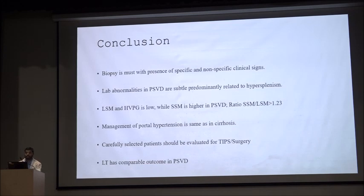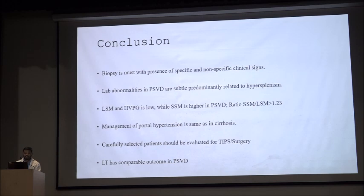In conclusion, biopsy is essential with assessment of specific and non-specific clinical signs. Lab abnormalities in PSVD are subtle, predominantly related to hypersplenism. LSM and HVPG are low while SSM is higher. The SSM to LSM ratio greater than 1.23 can be used for diagnosing NCPH. Management of portal hypertension is the same as in cirrhosis. Carefully selected patients should be evaluated for TIPS or surgery, and liver transplantation has comparable outcomes in PSVD.